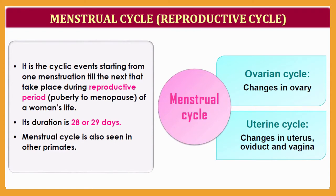The menstrual cycle is also considered a reproductive cycle. It is a cyclic event starting from one menstruation until the next, taking place during the reproductive period — that is, from puberty (menarche) to menopause. Each cycle has a normal duration of 28 or 29 days in females.